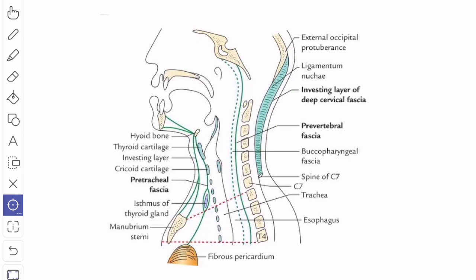Now we will see the vertical extent of the pretracheal fascia. Traced above, the pretracheal fascia is attached to the hyoid bone in the midline and to the oblique line of the thyroid cartilage and the cricoid cartilage arch.